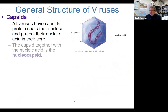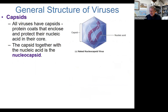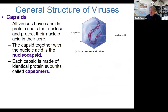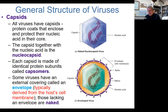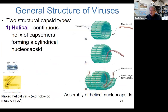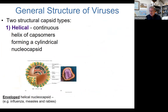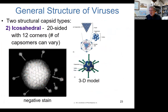We go into more details about the outer capsids. When we combine the nucleic acid and the outer capsid, we call it the nucleocapsid. Some viruses may have, external to the nucleocapsid, an envelope acquired from the host cell membrane when the nucleocapsid buds from the cell. Those that lack an envelope we call naked viruses. Then we get into the helical and icosahedral types, which can be enveloped or naked.